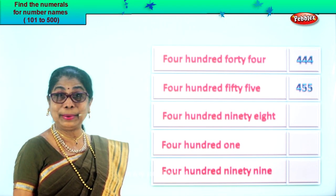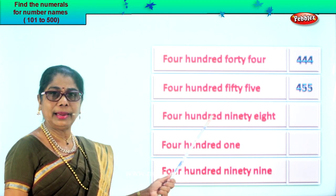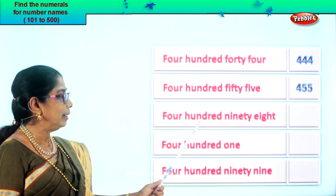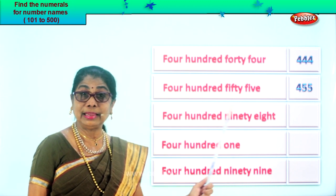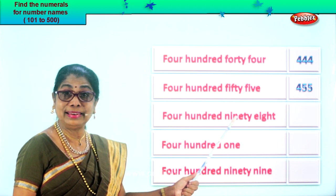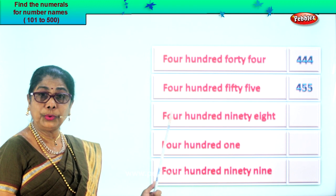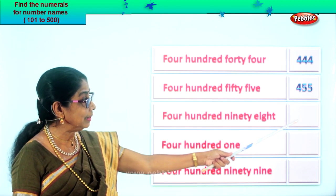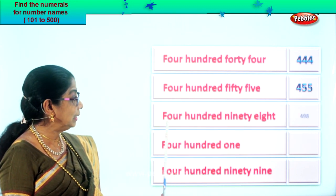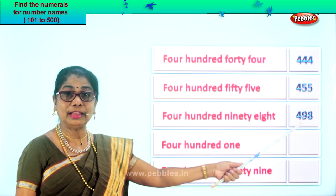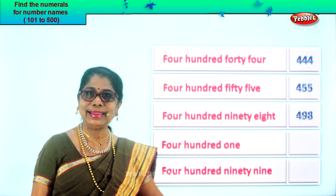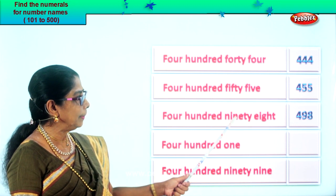Let's look at the next number name: four hundred ninety-eight. Four in the hundreds place, nine in the tens place, eight in the ones place — four, nine, eight. So we write it as four hundred ninety-eight. How do you read this? Four hundred ninety-eight.